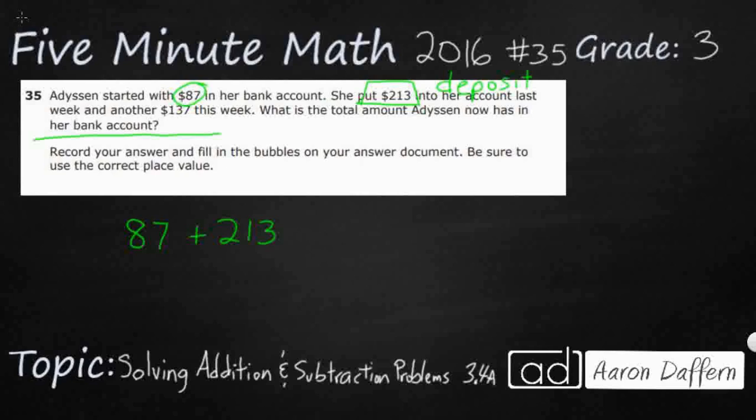And then another $137 this week. So she's still putting money in. She put in $213 last week and another $137 this week. So this put right here, this deposit still goes with this. So she starts with $87, she deposits $213 last week, and then this week she deposits $137. What is the total amount Addison now has in her bank account? This seems like it's a simple addition problem: $87 plus $213 plus $137. So let's add that up.